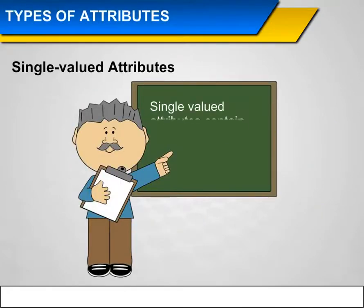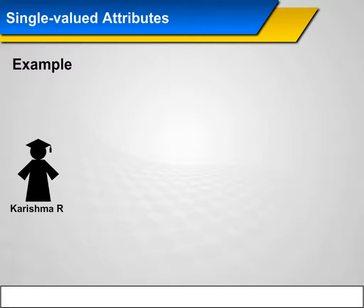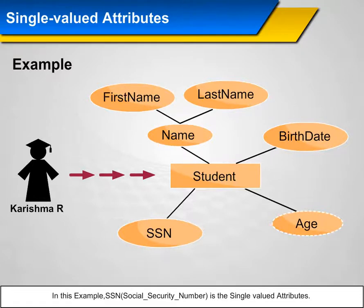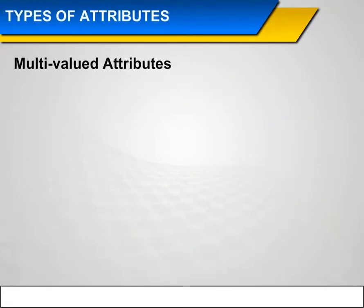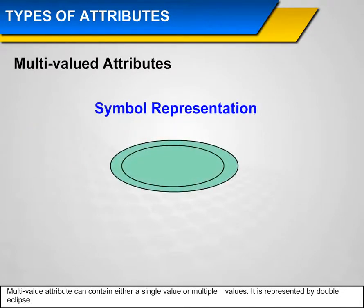Single-valued Attributes: Single-valued attributes contain a single value. Example: SSN (Social Security Number) is a single-valued attribute. Multi-valued Attributes: A multi-valued attribute can contain either a single value or multiple values. It is represented by a double ellipse.